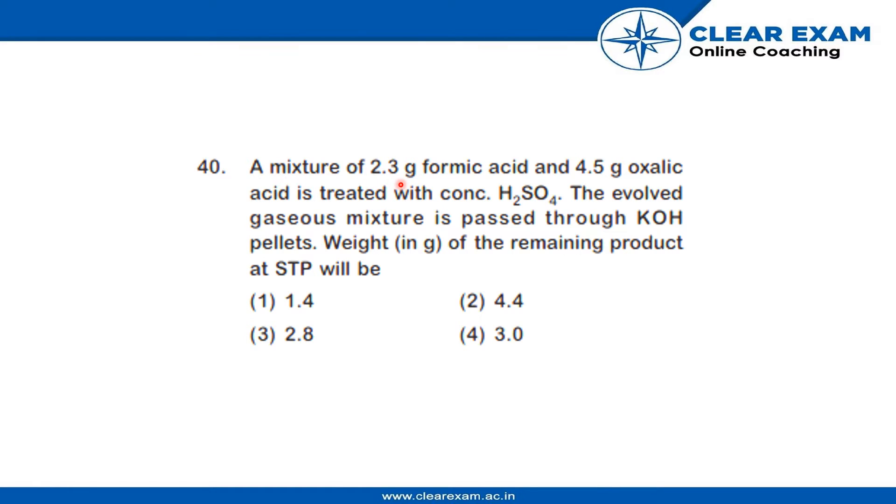A mixture of 2.3 g formic acid and 4.5 g oxalic acid is treated with concentrated H2SO4. The evolved gaseous mixture is passed through KOH pellets. Weight in grams of the remaining product at STP will be: (1) 1.4, (2)